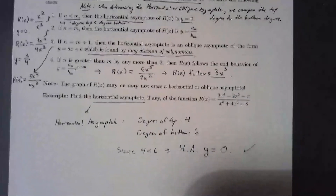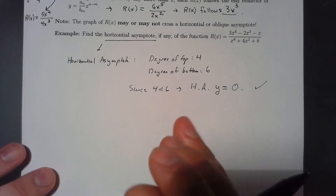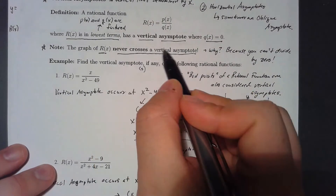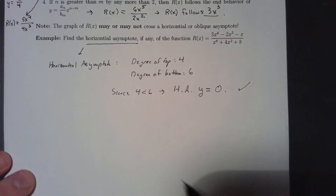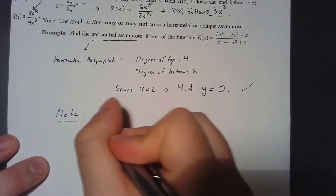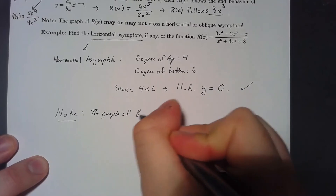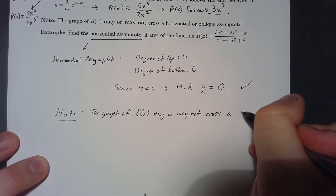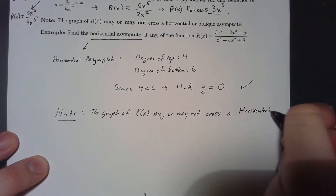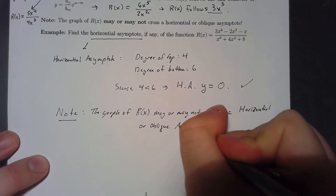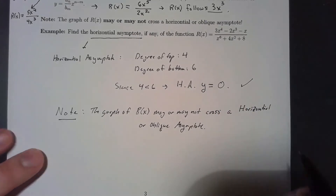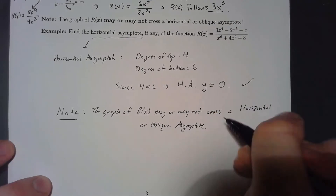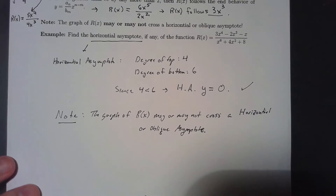An important note: while the graph of a rational function can never cross a vertical asymptote, it may or may not cross a horizontal or oblique asymptote — it just depends on the function. We'll examine how to determine that in the next section.